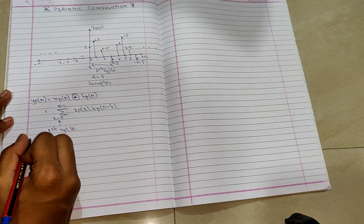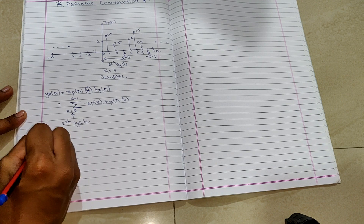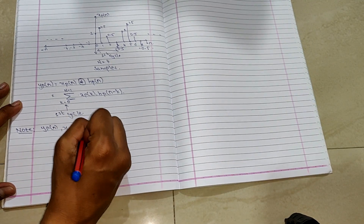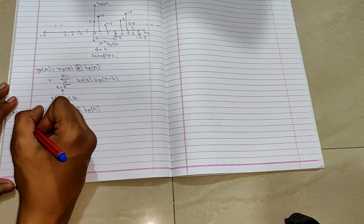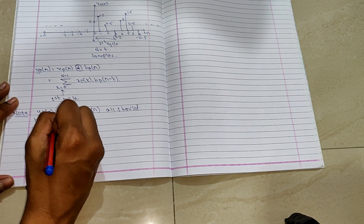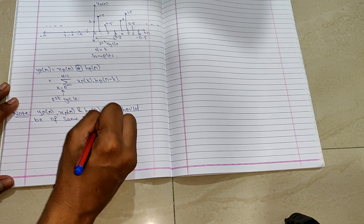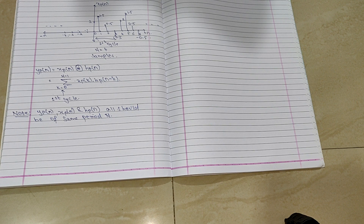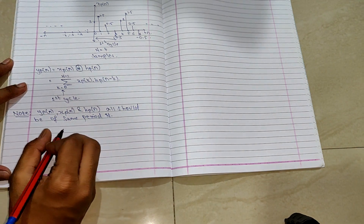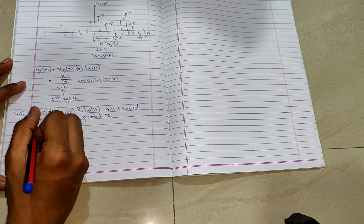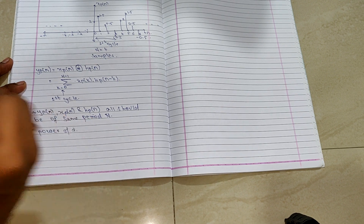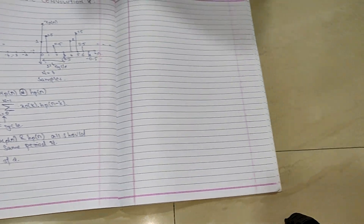You need to remember a few important points. The signals y of p of n, x of p of n, and h of p of n — your impulse — should all be of the same period. Only then can we do this circular convolution. If N here is 4 samples and N for the other signal is not 4 samples, then we can't do that. Also, the sample period should be selected such that it is a power of 2.